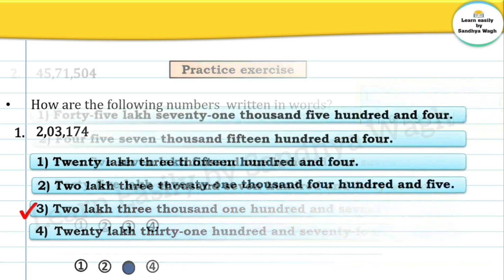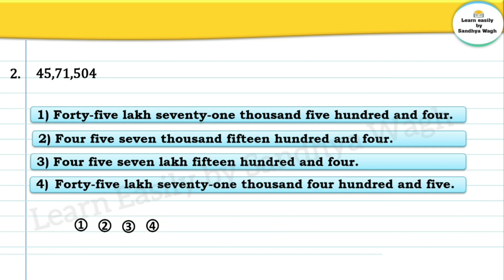Now let's see the second question: 45715004. This number has three periods — the ones or units period (hundreds, tens, units), the thousands period (ten thousands and thousands), and the lakhs period (ten lakhs and lakhs). Reading the number: forty five lakh seventy one thousand five hundred and four. The correct option is option number one: forty five lakh seventy one thousand five hundred and four.